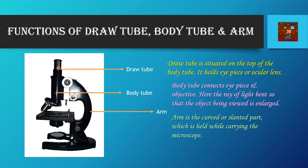The arm is the curved or slanted part which is held while carrying the microscope for shifting purposes or something like that.